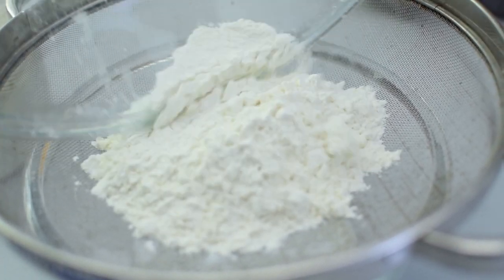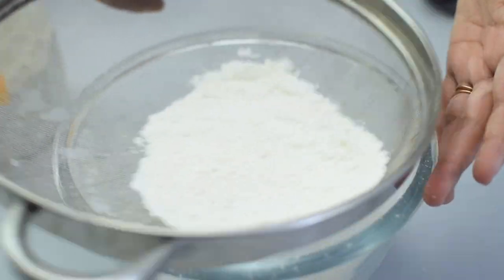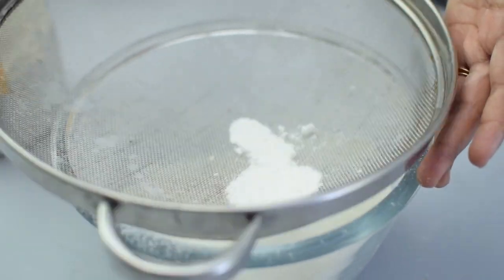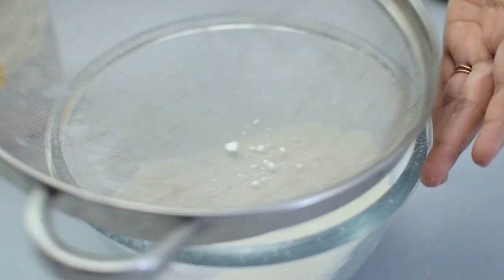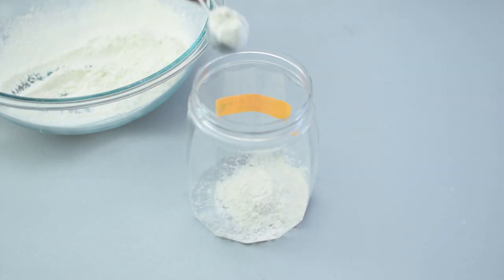The key here is the ratio: for every cup of maida or all-purpose flour, add 1 and a half teaspoon of baking powder and a quarter teaspoon of salt. You can double or triple the recipe based on your requirement.